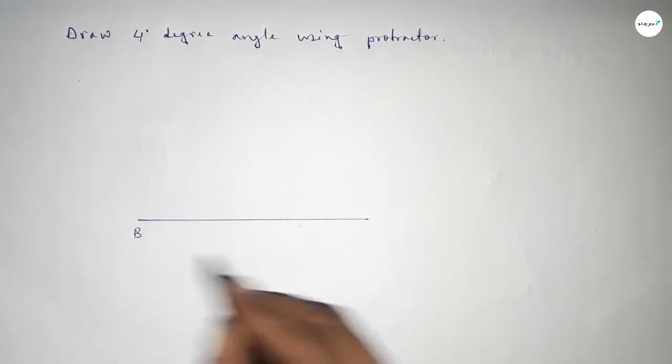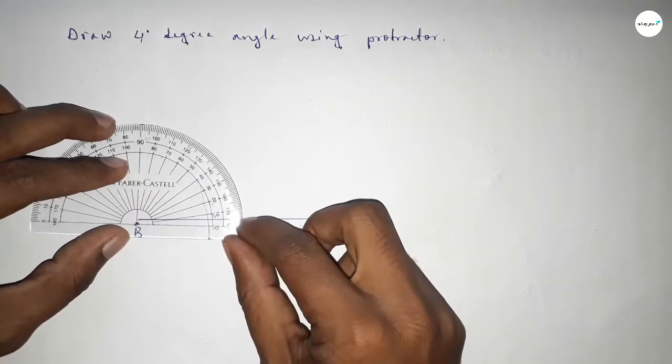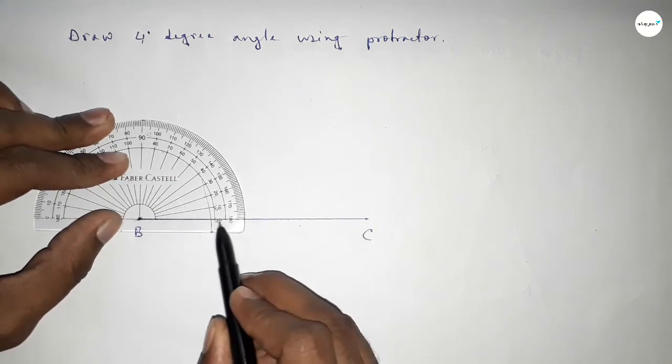Now putting the protractor on point B and counting 4 degrees: this is zero, one, two, three, four.